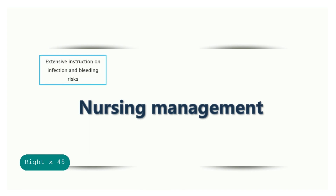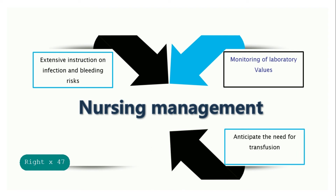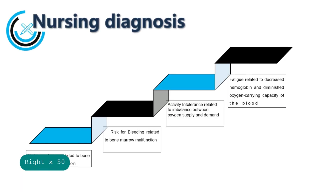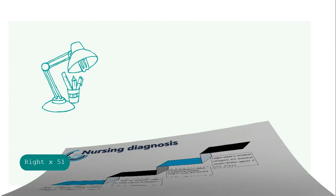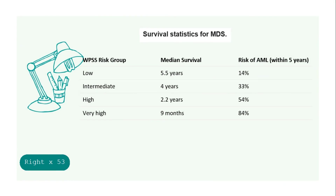For nursing management: extensive instruction on infection and bleeding risk, monitoring of laboratory values, anticipating the need for transfusion, and instruction about receiving chelation therapy. For people who are diagnosed with MDS, the estimated length of survival is influenced by the risk category, the presence of underlying medical problems, and age. However, these numbers represent averages and do not necessarily predict what will happen in any individual situation. There is considerable variation from person to person, especially in the lower risk group.